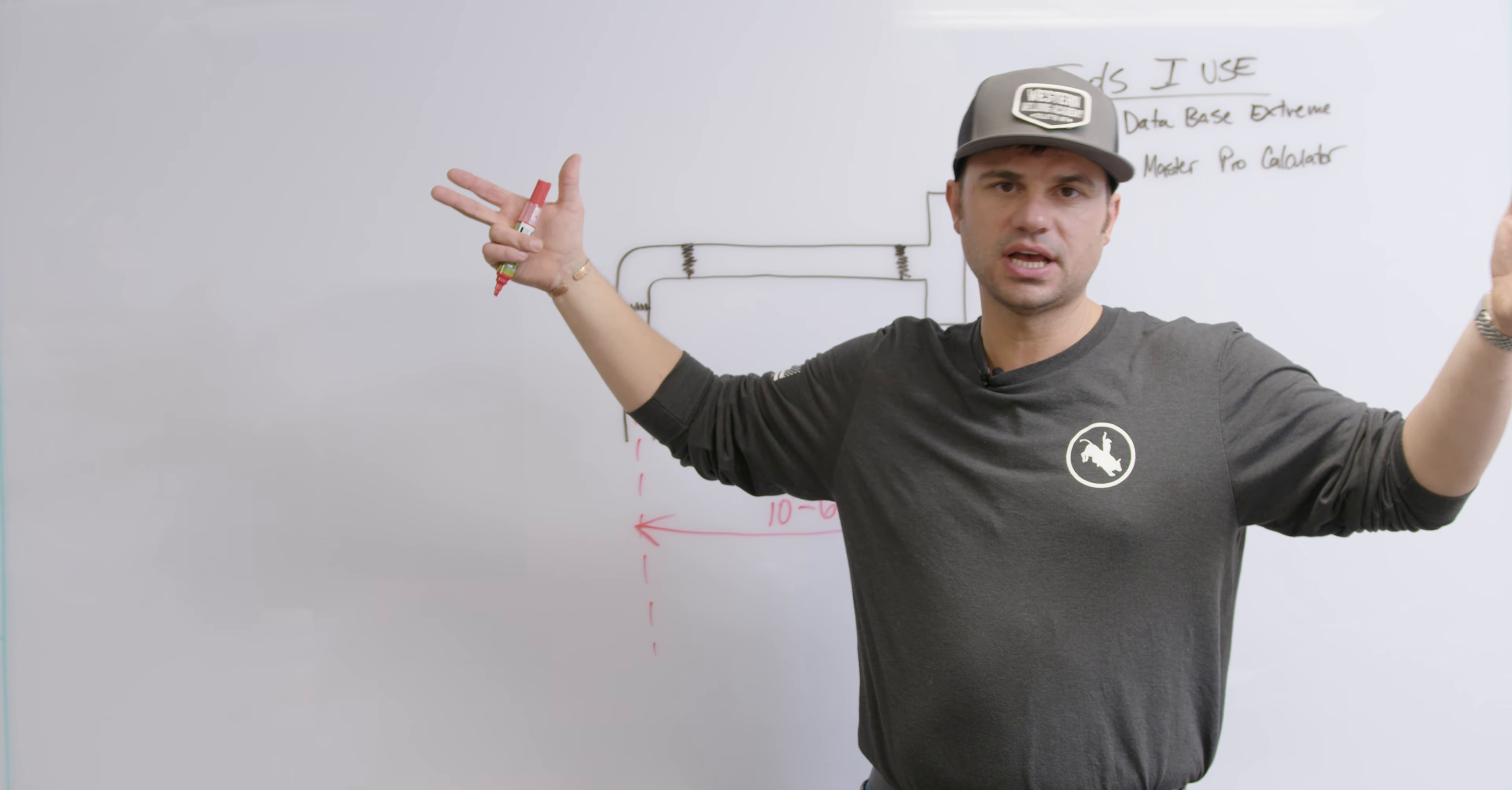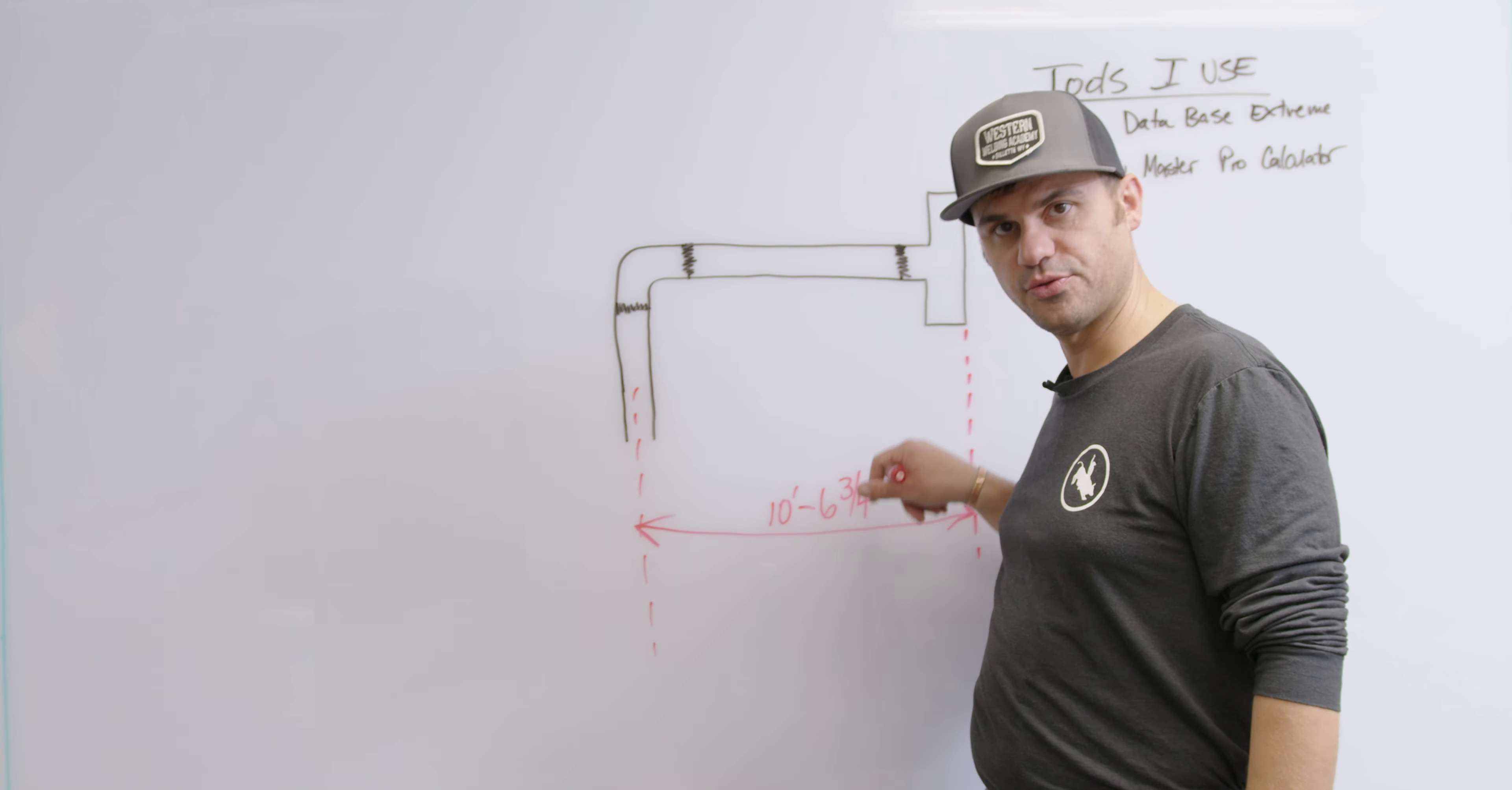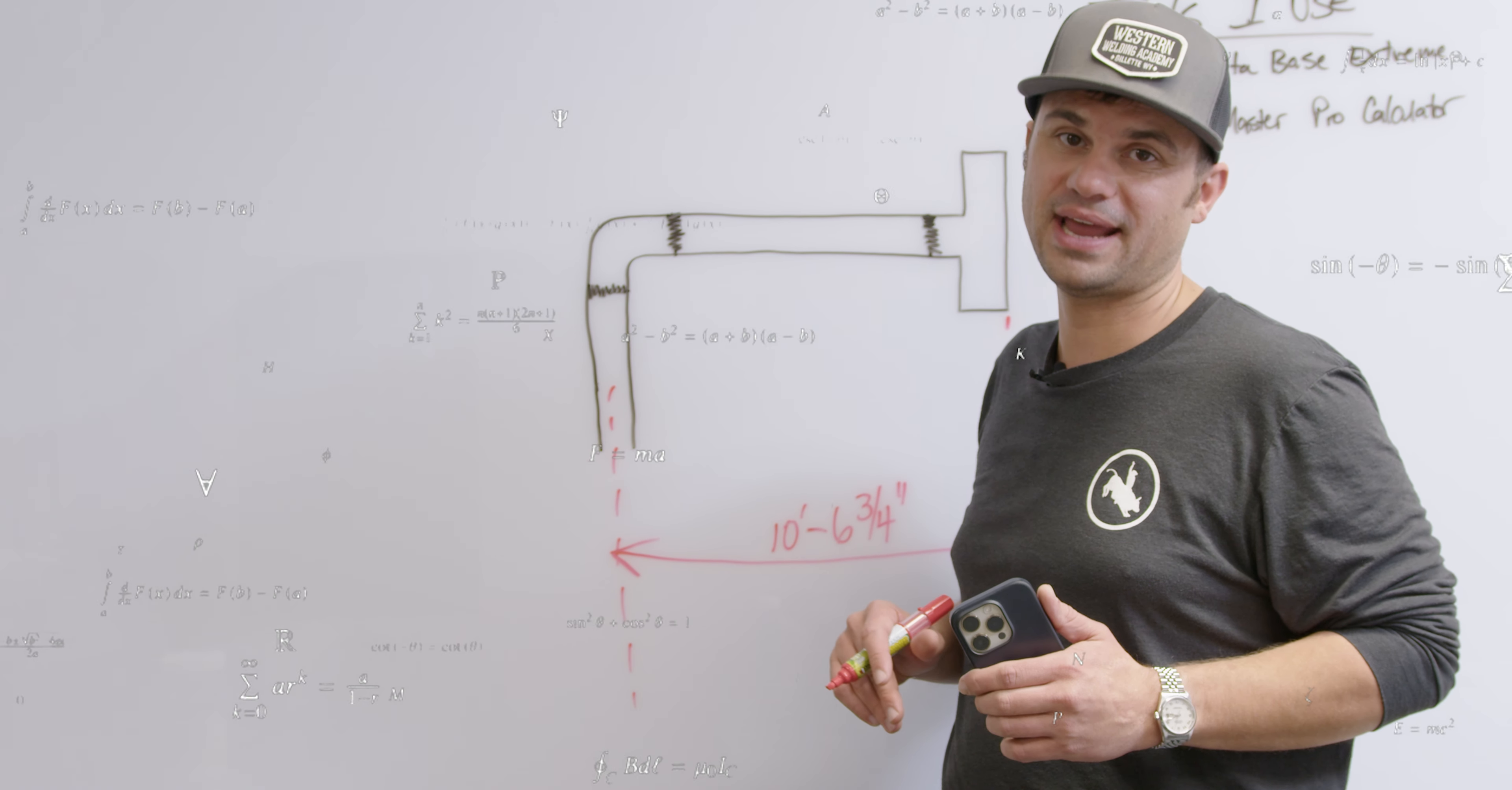One of the mistakes that a lot of young welders and pipe fitters make is they tend to measure out something in inches. If you come to me and you say hey I need a piece of pipe that's 280 inches long, I don't know how long that is.